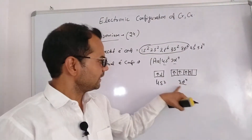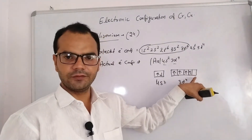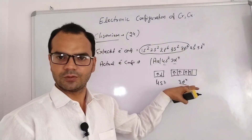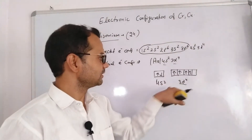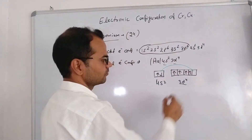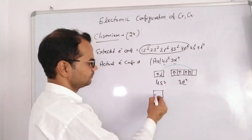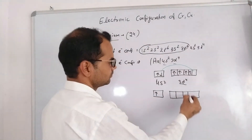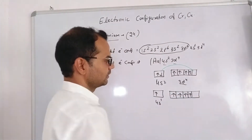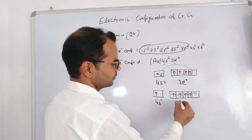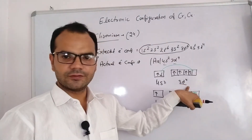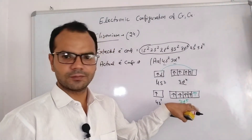We can see that d⁴ is nearest to the d⁵ configuration. If it requires one electron from somewhere, it will become a half-filled orbital, and half-filled orbitals are more stable. Due to the comparable energy of 4s² and 3d⁴, one electron can be excited from 4s² to 3d⁴. So the configuration changes: 4s² becomes 4s¹, and 3d⁴ gains one electron to become 3d⁵. So 3d⁵ is more stable than 3d⁴ because it is a half-filled orbital.